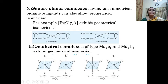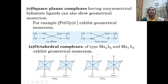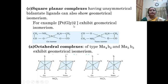Square planar complexes having unsymmetrical bidentate ligands can also show geometrical isomerism. If identical bidentate groups are present on the same side it is a cis isomer, and if they are on the opposite side it is a trans isomer. For example, bisglycine platinum exhibits geometrical isomerism.